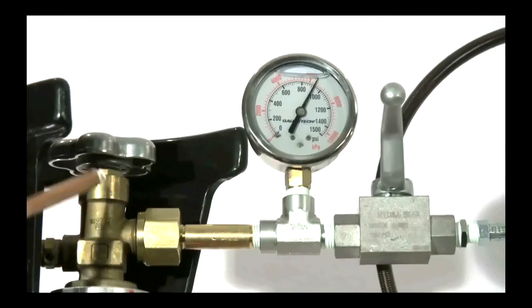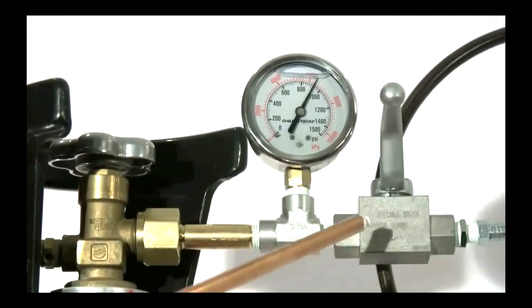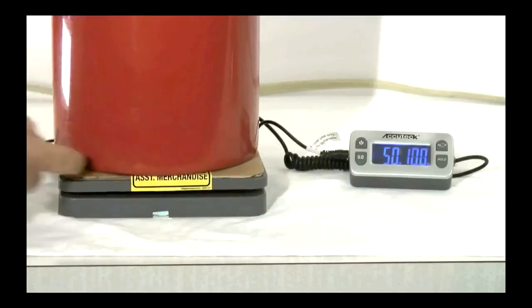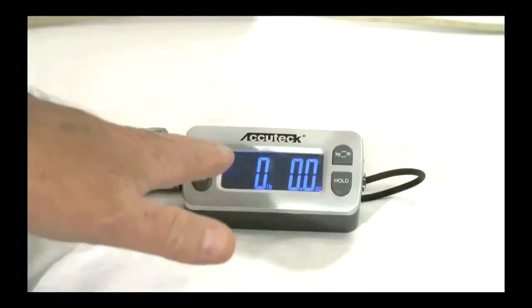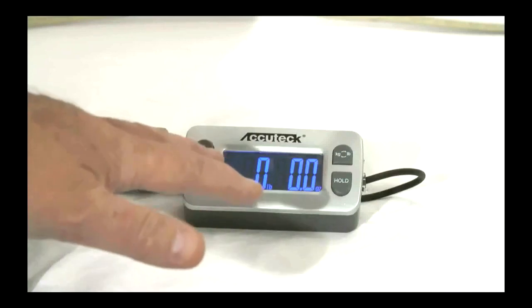This is the supply tank rotary valve and the isolation valve. The supply tank is positioned on the scale and centered. The weight can be seen. I will zero the scale in advance of the CO2 loading.